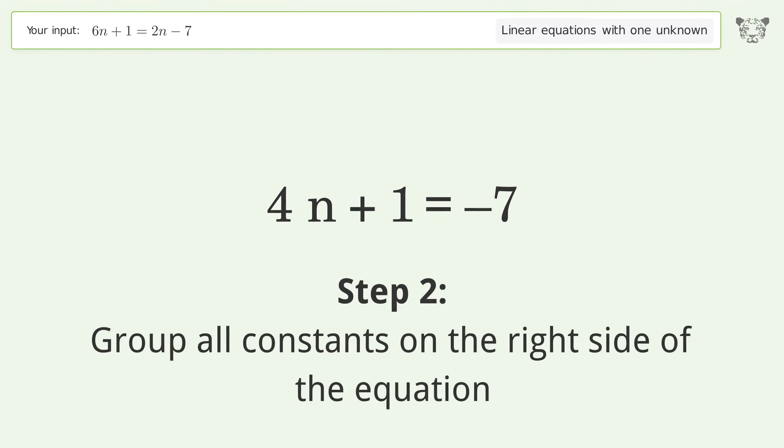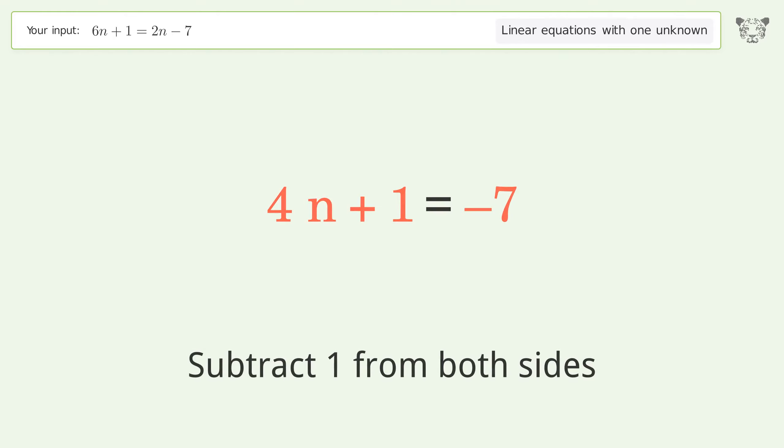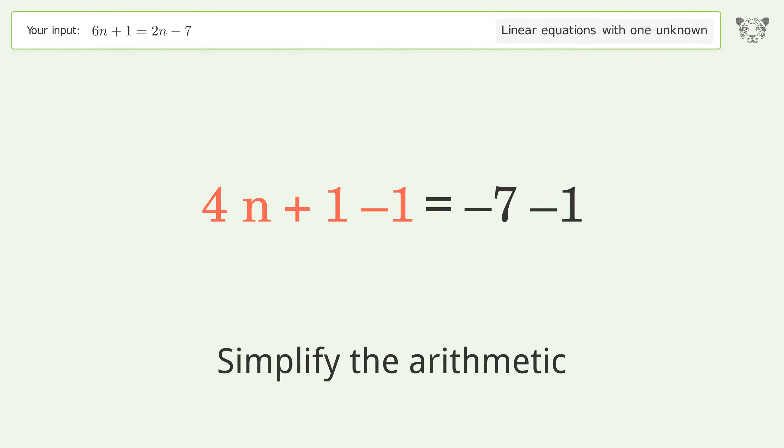Group all constants on the right side of the equation. Subtract 1 from both sides. Simplify the arithmetic.